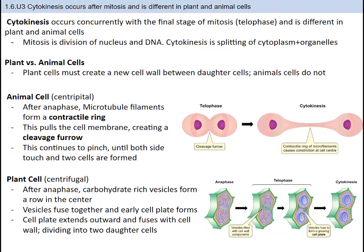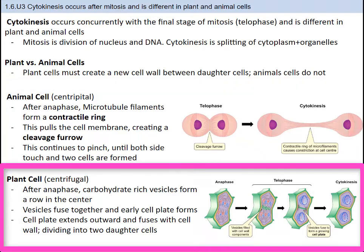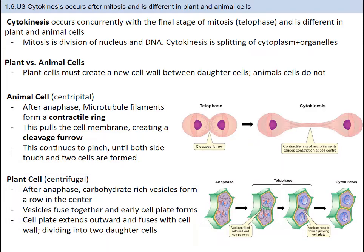The last part of the cell cycle is cytokinesis. If mitosis results in two identical nuclei, then cytokinesis results in two identical daughter cells, with the cytoplasm and organelles being evenly split. It works slightly differently in animal cells and plant cells. In animal cells, after anaphase, microtubule filaments form a contractile ring, pulling the cell membrane to create a cleavage furrow, which continues to pinch until two cells are formed. In plant cells, after anaphase, carbohydrate-rich vesicles form a row in the center, fuse their membranes together forming the early cell plate, which extends outward and fuses with the cell wall, dividing into two daughter cells. Plants have to deal with the cell wall, while animal cells do not.